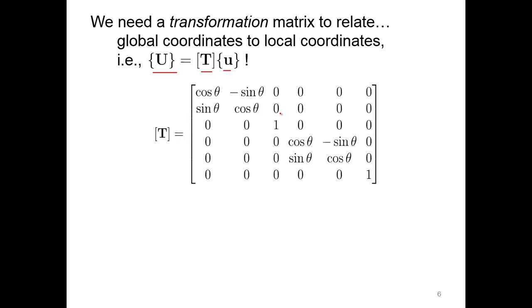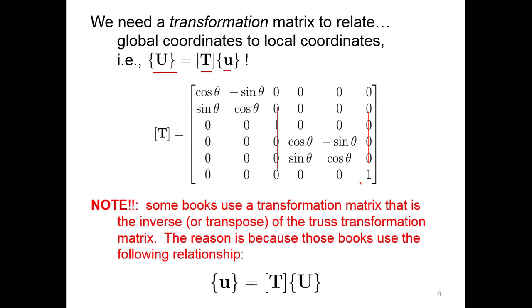The thing that's different now is we have an extra row here for the rotation piece. We now have the six by six, because we have three degrees of freedom at one node, three degrees of freedom at the other node. So now we have a six by six for frame element, as opposed to a four by four that we looked at before.